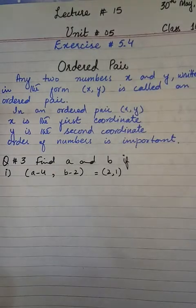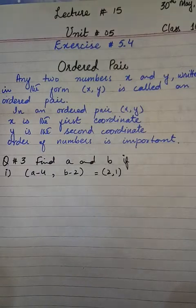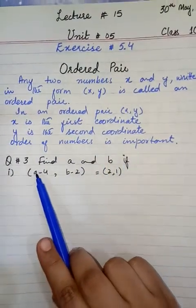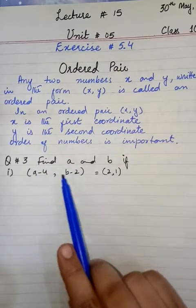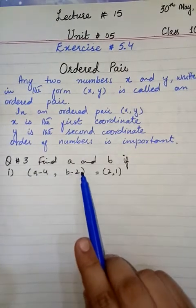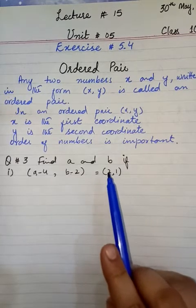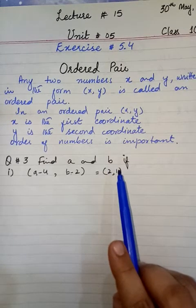So let's start our question number 3. We have to find A and B if there are two ordered pairs. One is having first coordinate A-4 and second coordinate B-2, and second ordered pair is 2 and 1. First coordinate is 2 and second coordinate is 1.